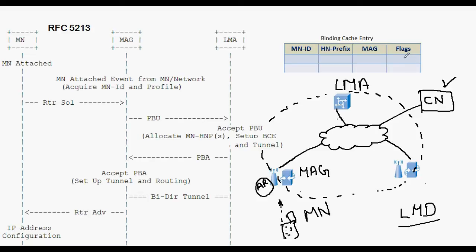There is also a flag in the binding cache entry indicating this is a proxy registration, along with the link information to the mobile node — that is, the mobile access gateway details, showing through what address the mobile node can be reached from the local mobility anchor. After accepting the proxy binding update, the LMA allocates a home network prefix, creates a binding cache entry, sets up a bidirectional tunnel with the mobile access gateway, and sends a proxy binding acknowledgement to the mobile access gateway.